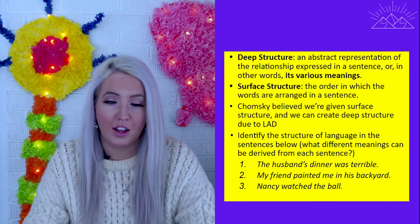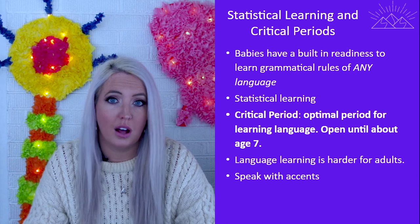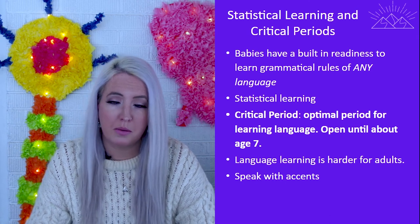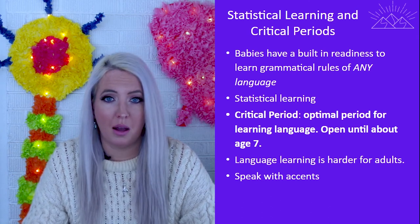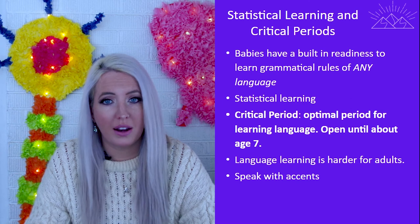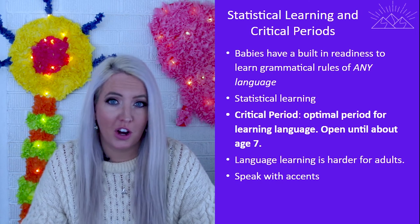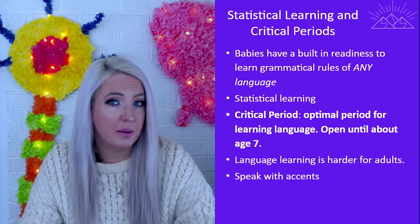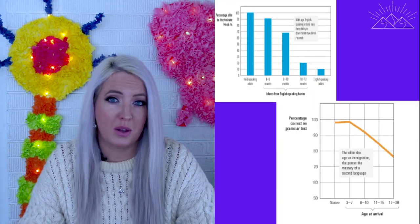Support for Chomsky's theory includes the critical period hypothesis. If you remember learning about Genie, she was not exposed to language in her first 13 years and was never able to fully master a language. Chomsky said the optimal period for learning a first language is until about age seven — after that, the window closes and it becomes more difficult. This is true for second languages as well. The younger we are, the more readily we can learn a second language. It's not impossible as we age, it just becomes more difficult, and phonemes are more challenging, so we might speak with an accent.